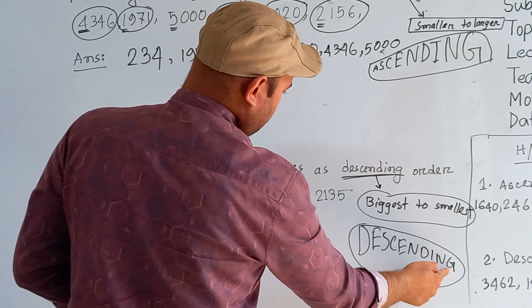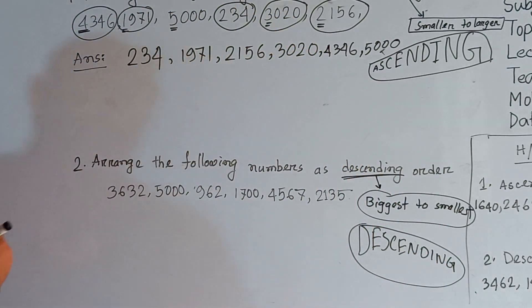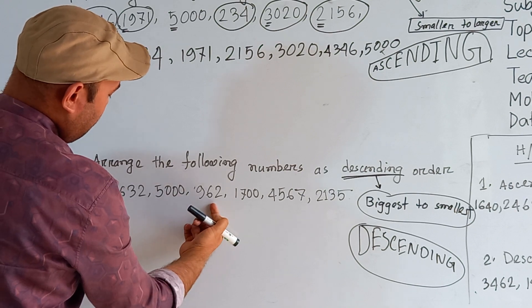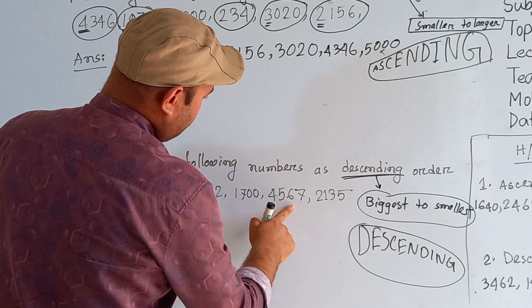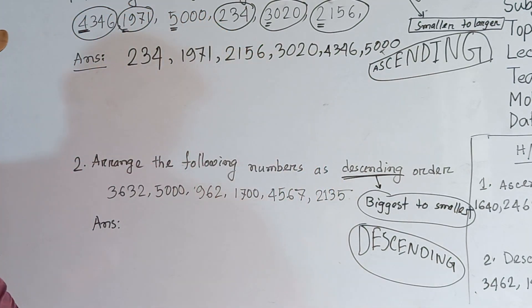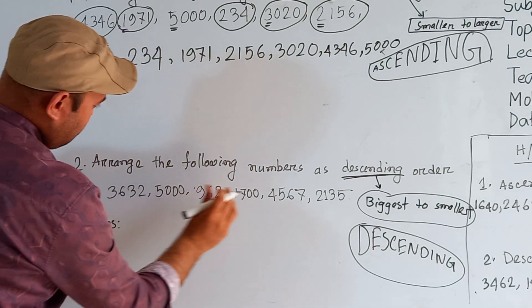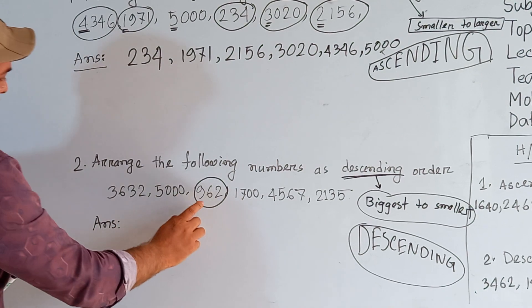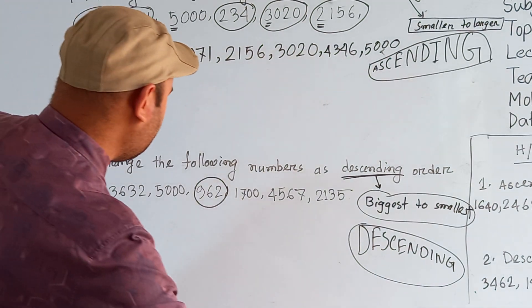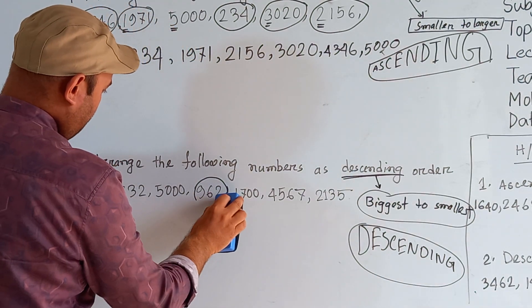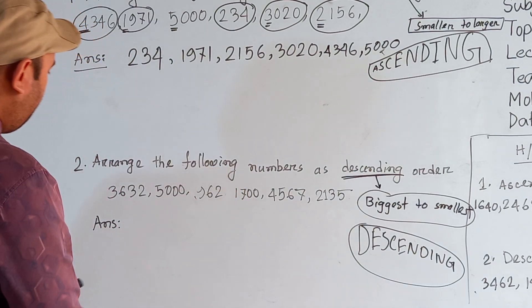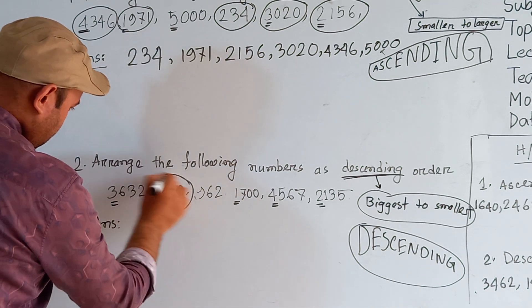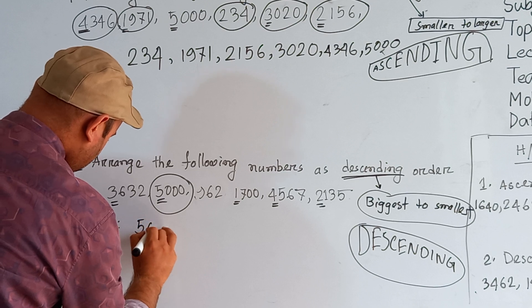The numbers for this question are: 3632, 5962, 1700, 4567, 2135, and 962. Most are four-digit numbers, but 962 has only three digits, so it will be the smallest and written last. Looking at the thousands place — 5000 is the biggest among them, so we write 5962 first.